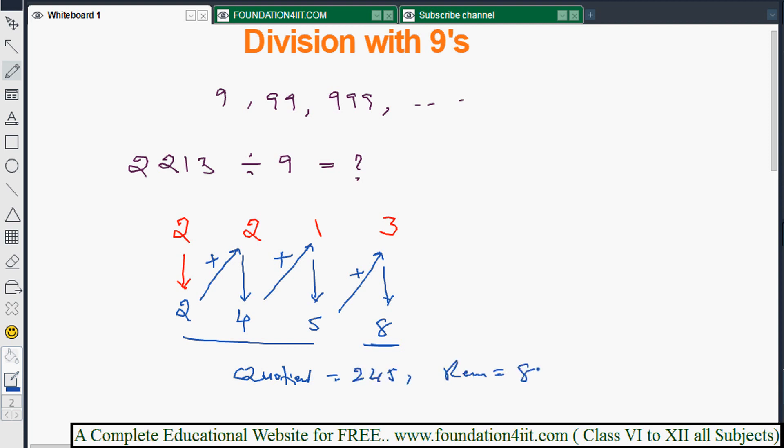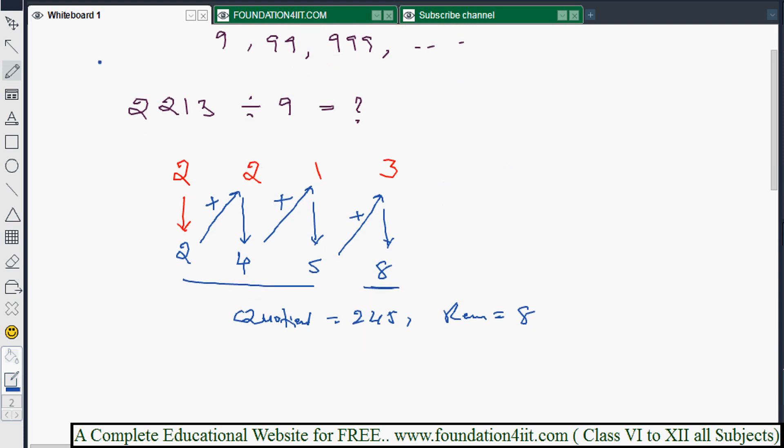See how simple it is. I'll show one more question. You can check with normal division to get the same result. 2213 divided by 9. What is the first step? 9 times 2 is 18. Subtract to get 4 and bring down the next number.